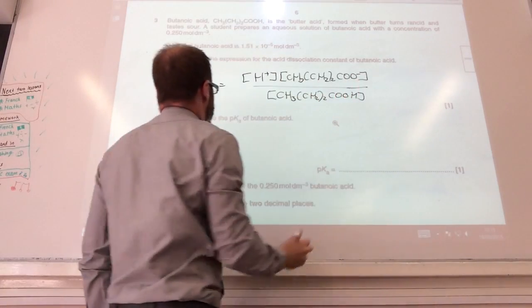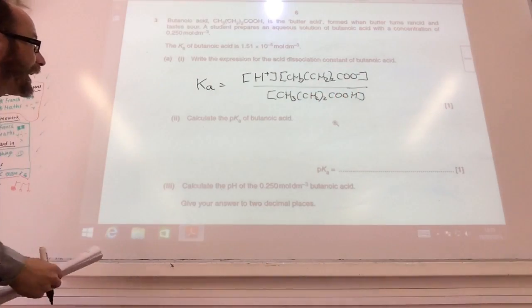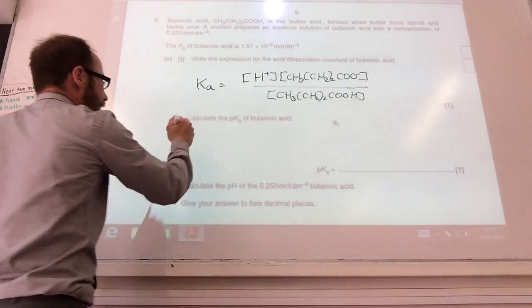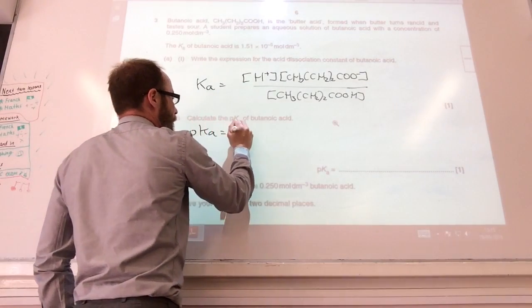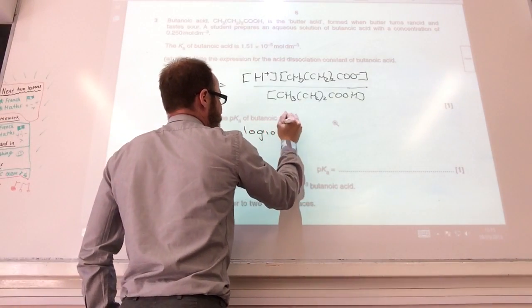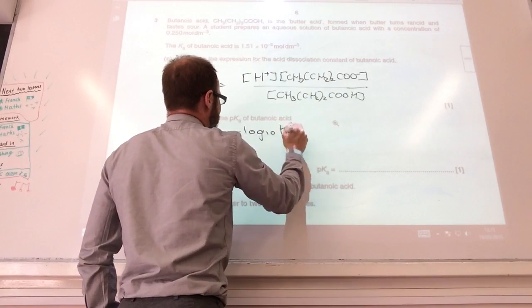over the concentration of the acid, like so. So, calculate the pKa of butanoic acid. Well, pKa is equal minus log to the base 10 of Ka.